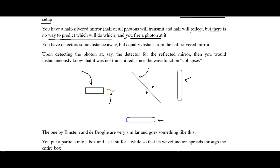Upon detecting the photon — say at the detector for the reflected path — you would instantaneously know that it was not transmitted, since the wave function collapses on this detector right here.